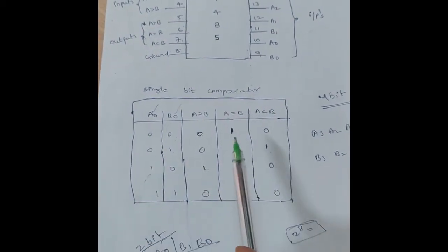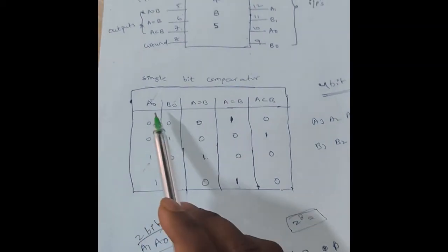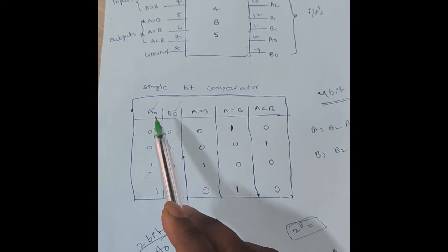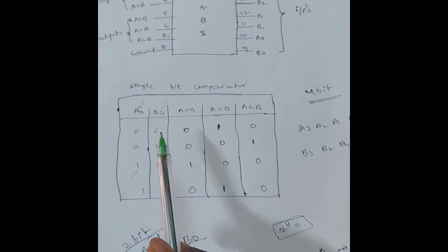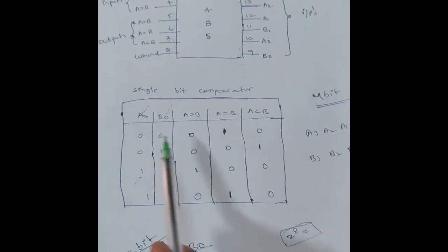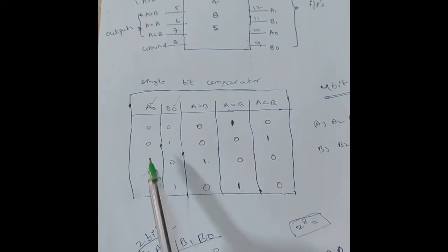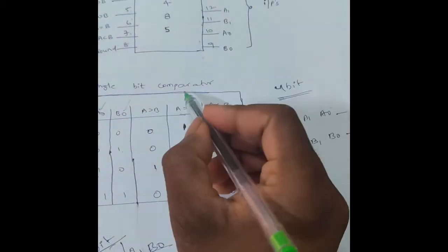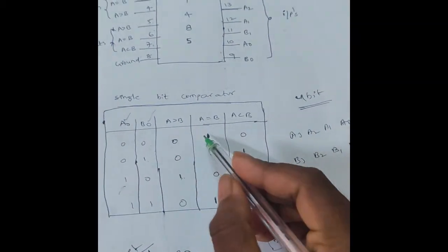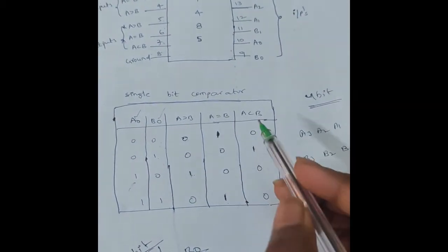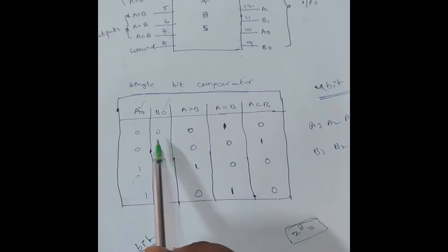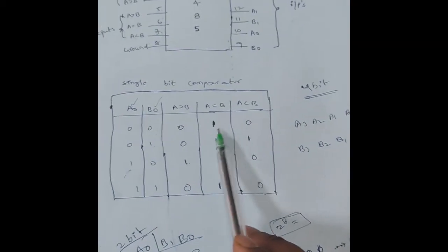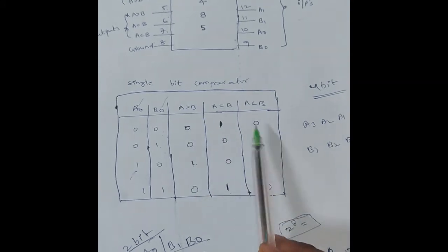In the function table of the single-bit comparator, A0 is one number and B0 is the other. There are four input combinations: 00, 01, 10, and 11. The three outputs are: A greater than B, A equal to B, and A less than B. When both inputs are 0 0, A equal to B is 1 and the remaining outputs are 0.